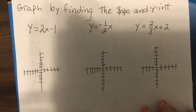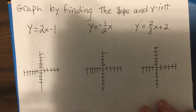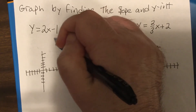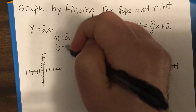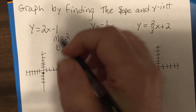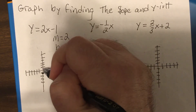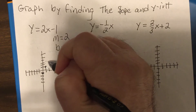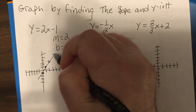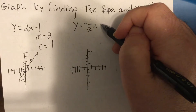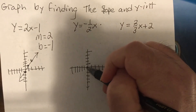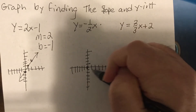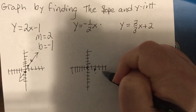Graph by finding the slope and y-intercept. The slope would be two, the y-intercept is negative one. A slope of two means up two, right one — up two, right one. The next one tried to trick you — you're adding zero to the term, so you start at the origin. The slope is negative one-half, so down one, right two — down one, right two.